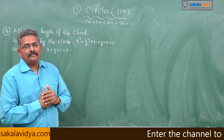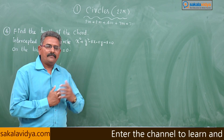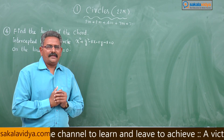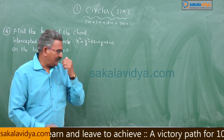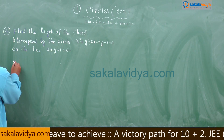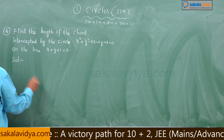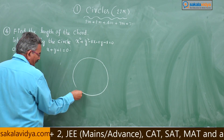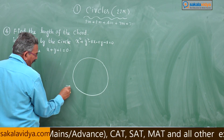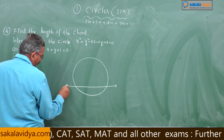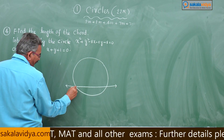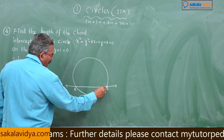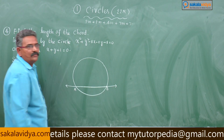Unless we visualize the problem — that means represent the problem — we cannot find out easily. So better, let us draw the figure first. This is the given circle, for example, and suppose the line passes through the circle at two points, say A and B. This segment AB is known as the chord, and this length of the chord we have to find out.